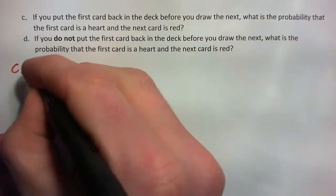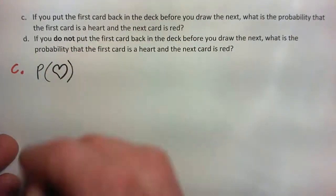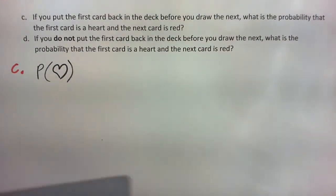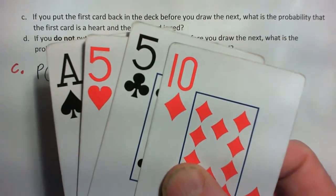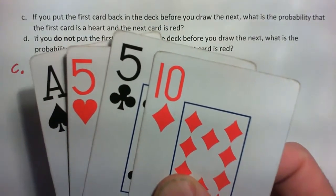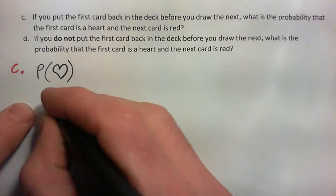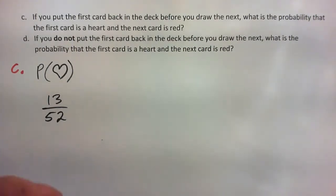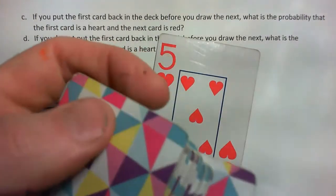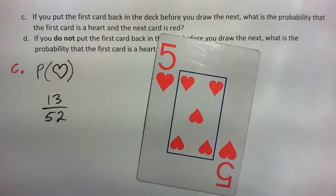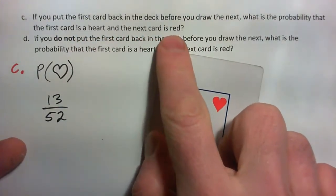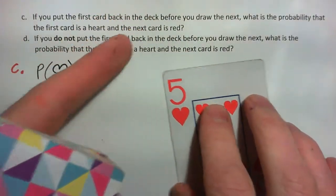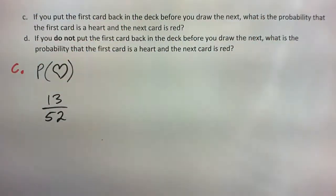What's the probability the first card is a heart? Remember, there are four suits: spades, hearts, clubs, diamonds — four suits, and there's 13 of each suit. So the probability of getting a heart is 13 hearts out of 52 cards, no jokers. So we pull out a heart — 13 out of 52 — and then we put the first card back in the deck and shuffle really well. Now what's the probability the next card is red?